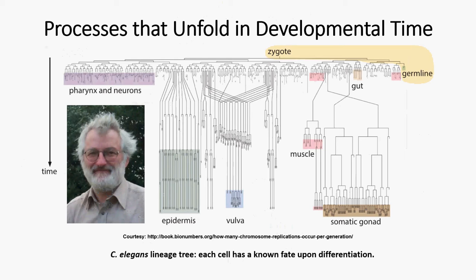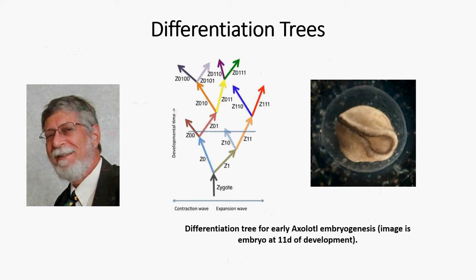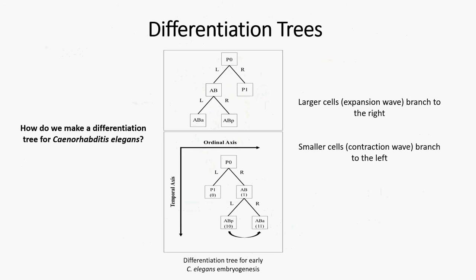Our inspiration is the lineage tree, first mapped out by John Sulston. You go from the zygote — from a single cell — all the way down to a whole host of tissues which make up the adult worm. It's a process of branching, but it's also a process of timing. That is one of the reasons why we're looking at differentiation trees, something that our collaborator Dick Gordon has come up with. On the right we have an axolotl embryo, and in the middle a differentiation tree for the axolotl, based on the differentiation of tissues over time and their relative size relative to one another. We can look at larger cells as being analogous to an expansion wave and smaller cells being analogous to a contraction wave.